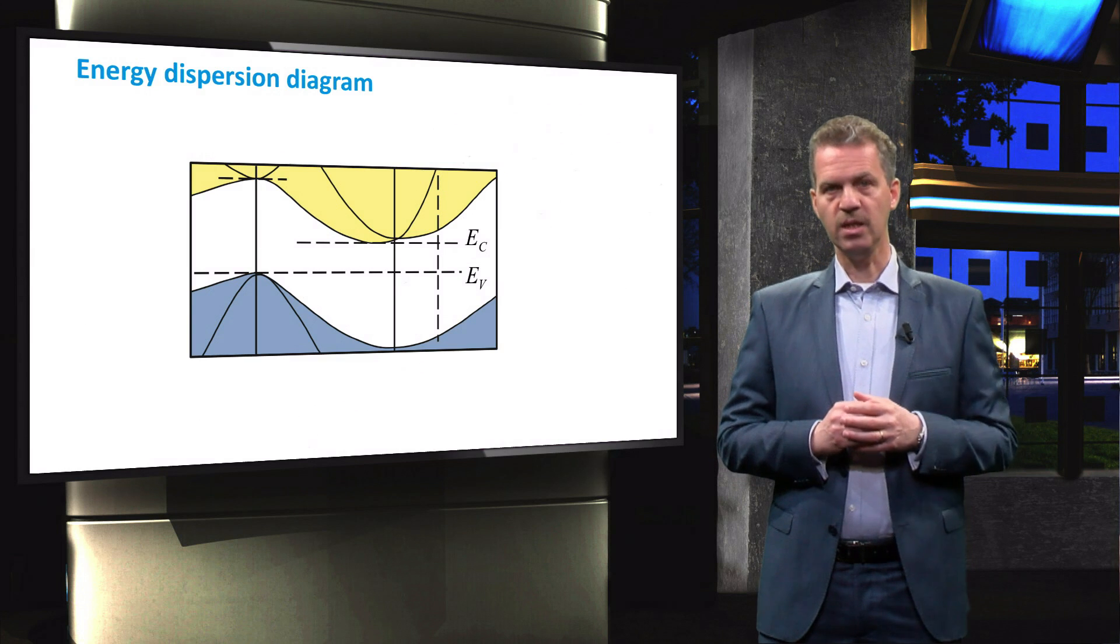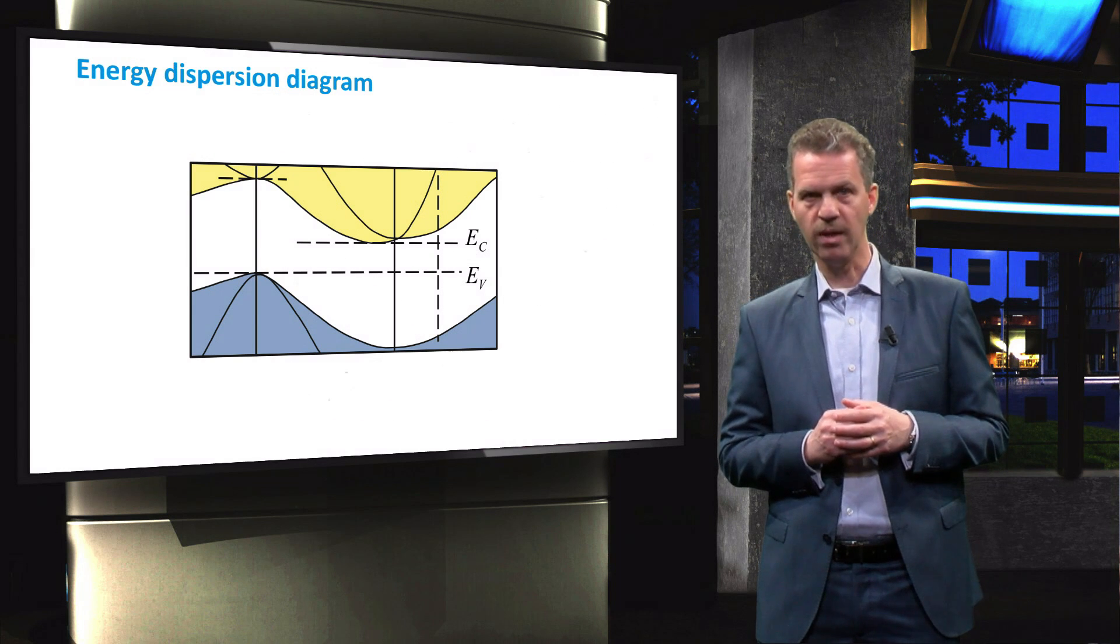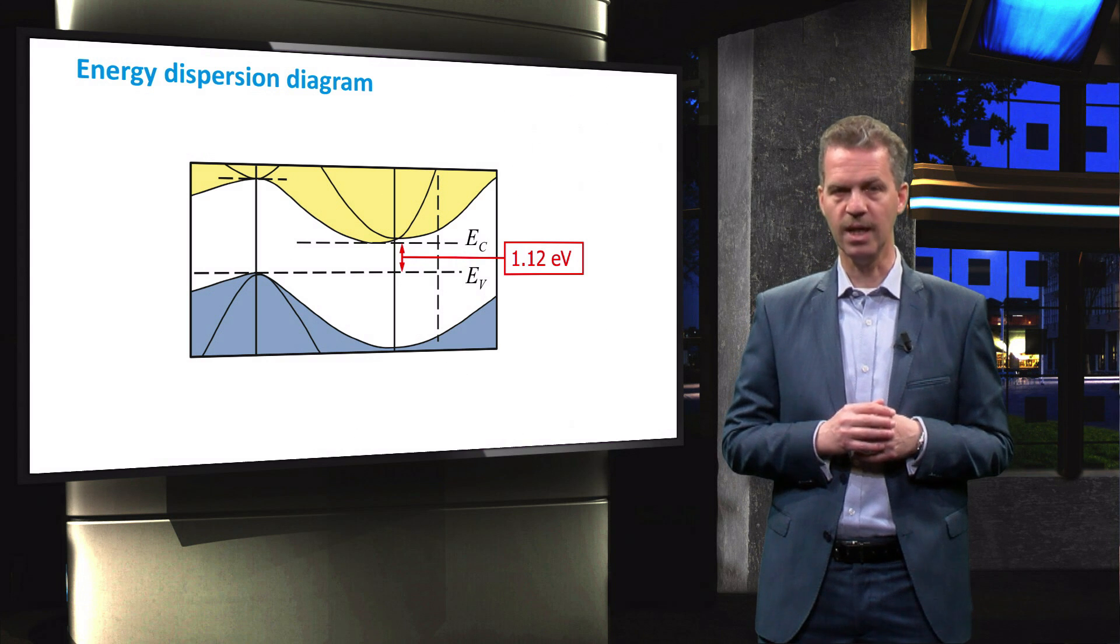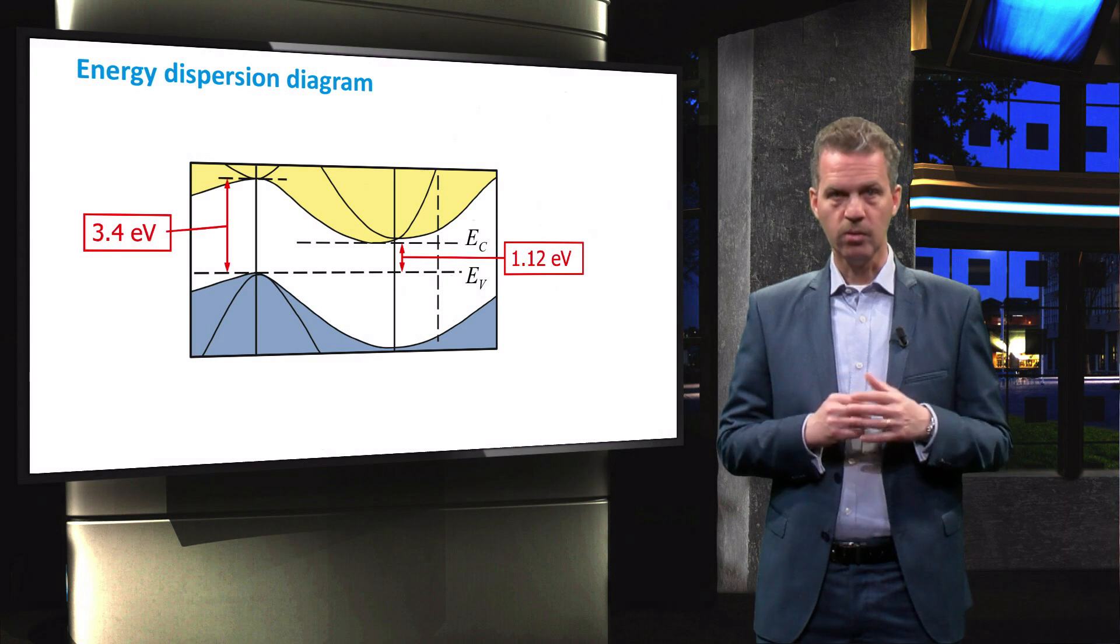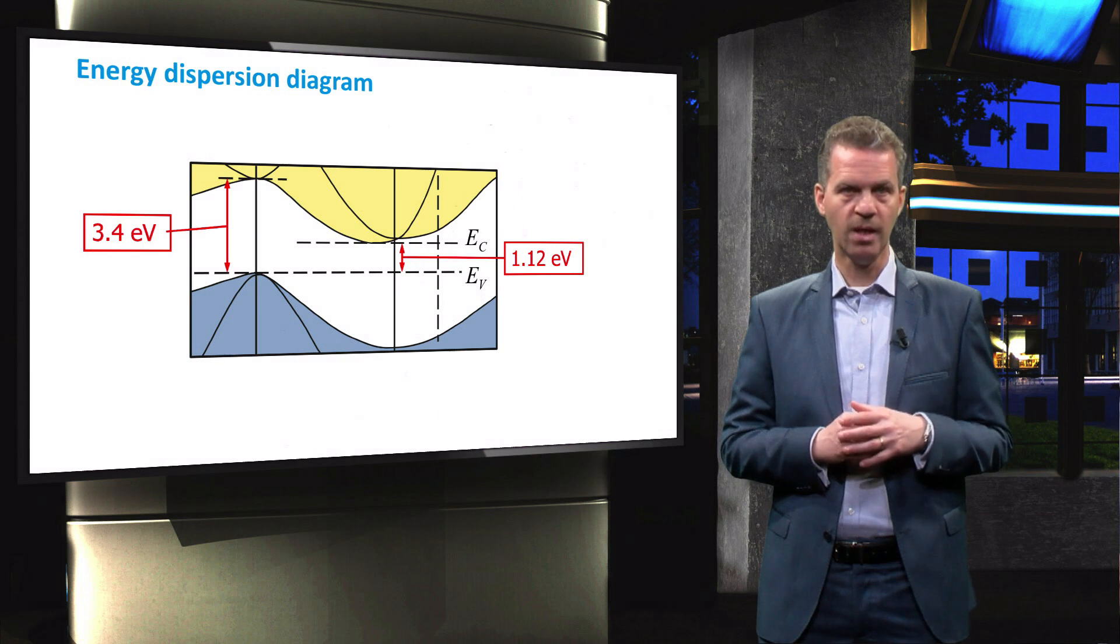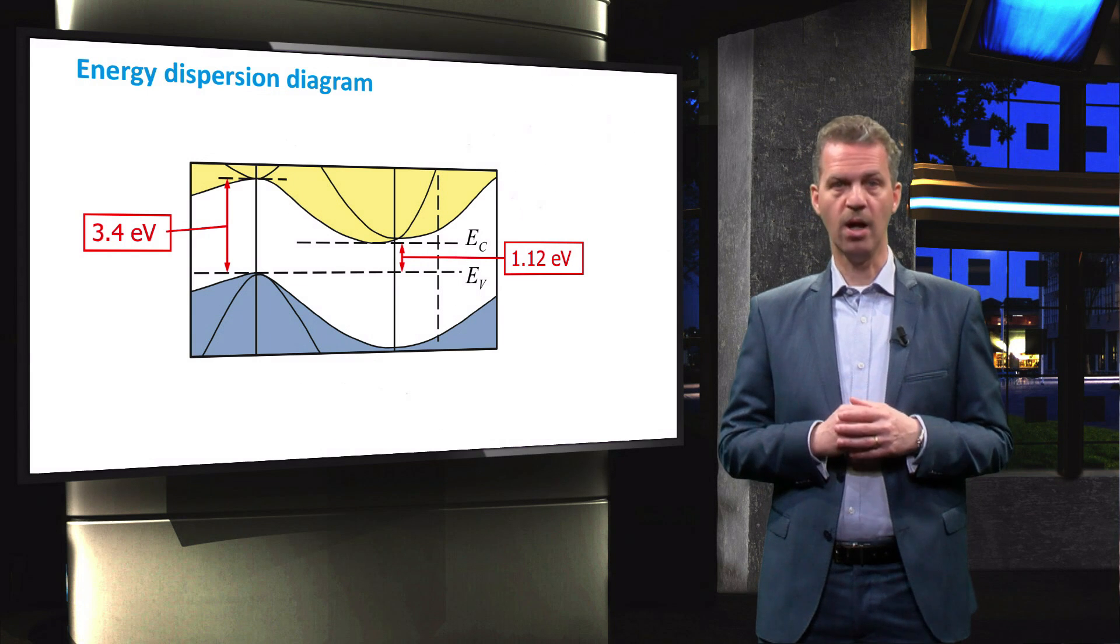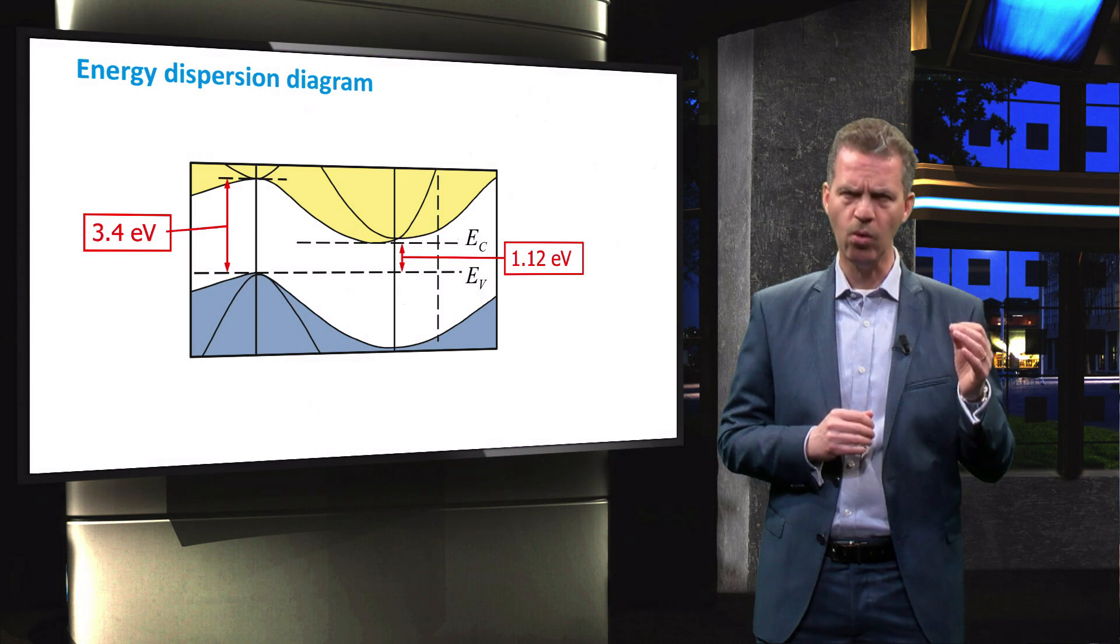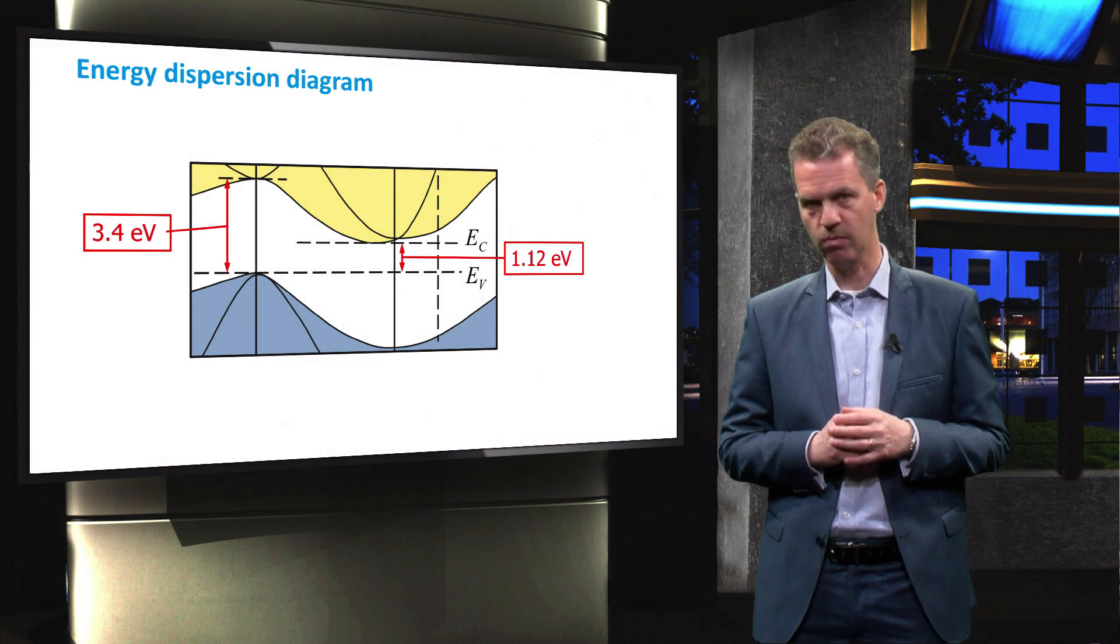If we look at the energy difference between the lowest point in the conduction band and the highest point in the valence band, then we find that the indirect band gap of crystalline silicon is 1.12 eV. However, silicon also has a direct band gap of 3.4 eV that is located at the center point of the reciprocal lattice. This implies that the absorption coefficient of the material is therefore increased by orders of magnitude for photon energies exceeding 3.4 eV.